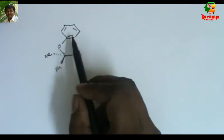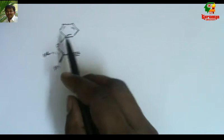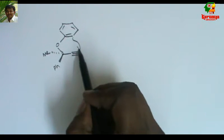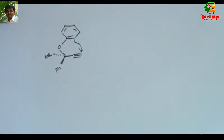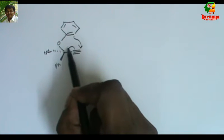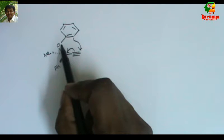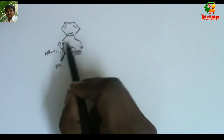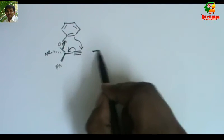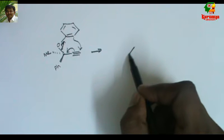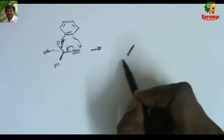Since O-phenyl is in the plane of the paper, it prefers to attack from that side, not from the opposite direction. So when it migrates here, what we get?